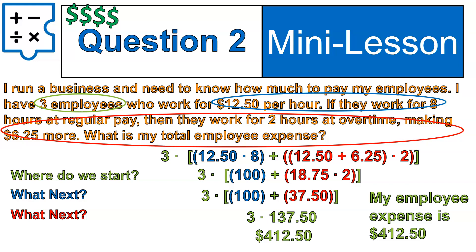So that's the solution for question number two. My total employee expense is $412.50. Each of those three employees is making $137.50 for one day of work — they were working at $12.50 per hour for eight hours plus two overtime hours.